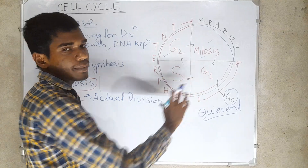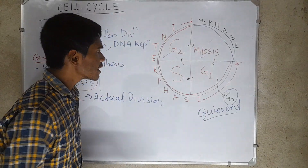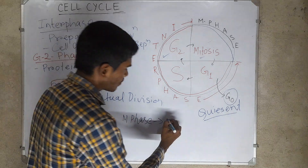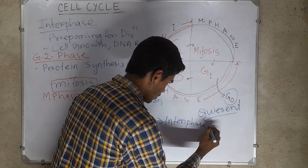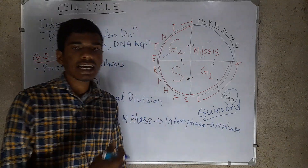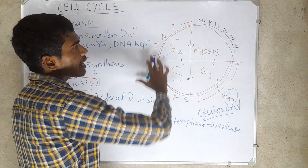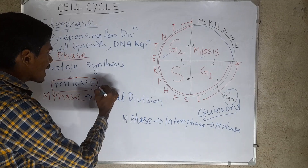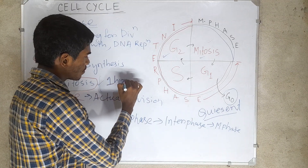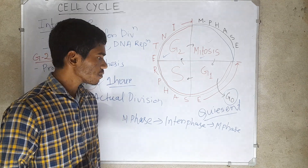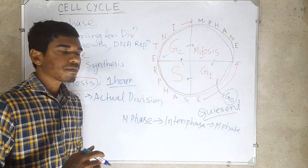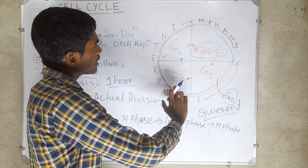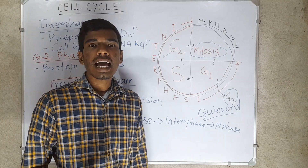The interphase represents the phase between two consecutive mitotic phases, and this cycle continues. The total time taken to complete the full cycle is approximately 24 hours, and mitosis takes only about 1 hour out of 24 hours — meaning the phase of actual cell division takes very little time compared to the interphase stages. Thanks for watching this video — like, share, subscribe, and comment.